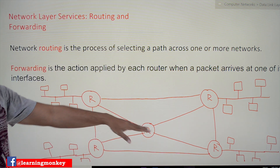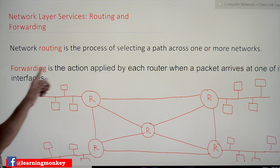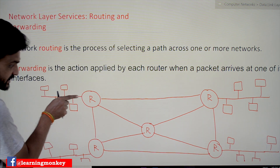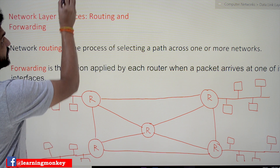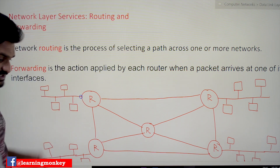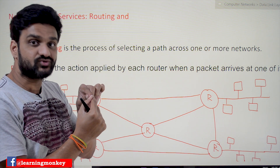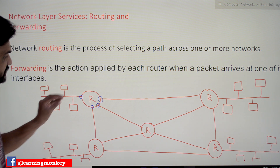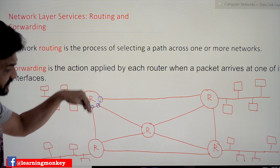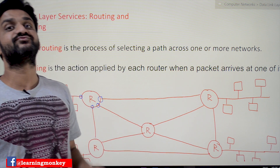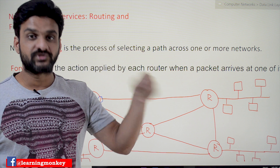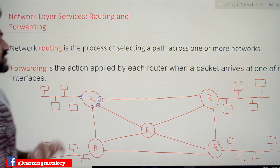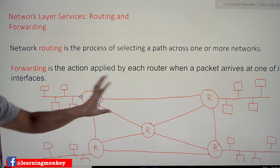The next concept is forwarding. Forwarding is an action applied by each router when a packet arrives at one of its interfaces. An interface is the junction where a network connects to the router. Whenever a packet is received, the decision of through which interface the packet has to be transmitted is what we call forwarding.